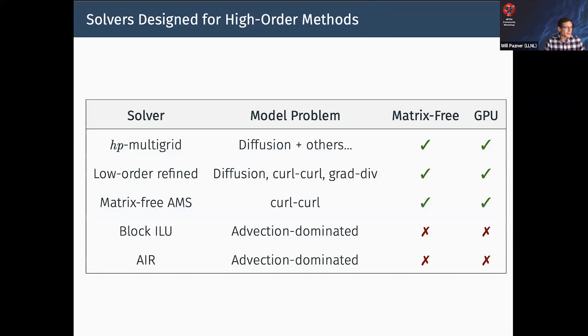In this talk, I'm going to discuss a few options we have for higher-order solvers. This isn't capturing absolutely all of them, but it's probably the main ones. We have HP multigrid - the model problem here is diffusion, but multigrid has been applied to almost every problem under the sun, so it's quite flexible. It's matrix-free and works on the GPU.